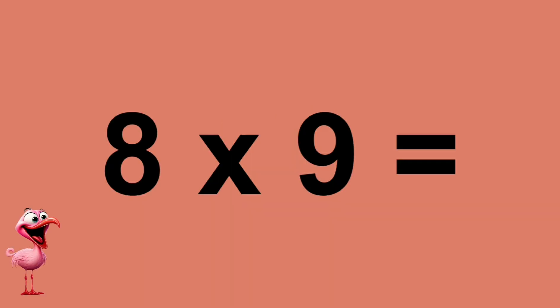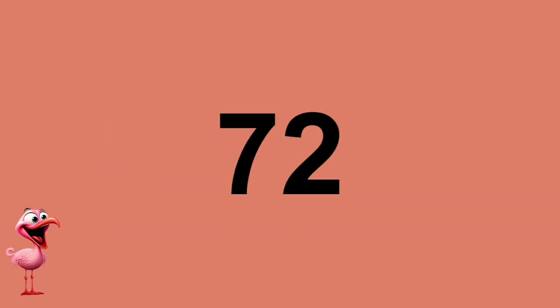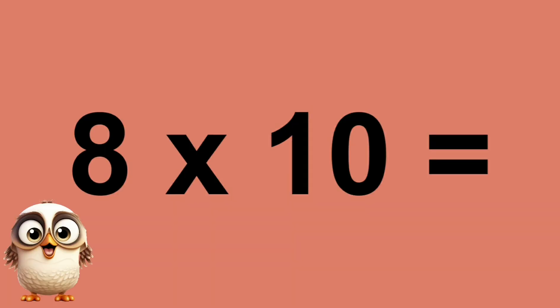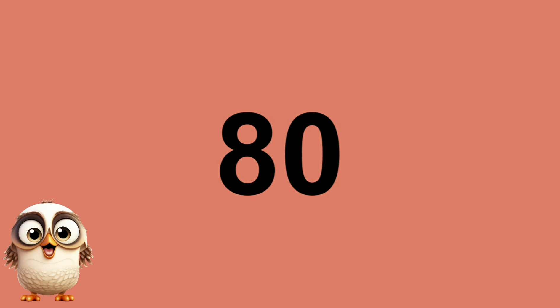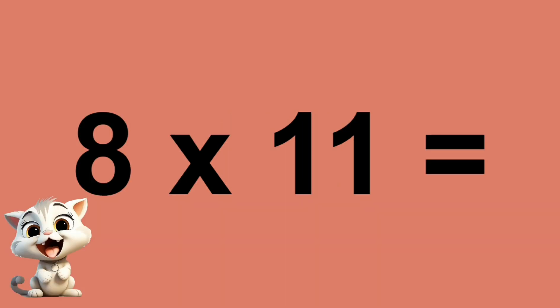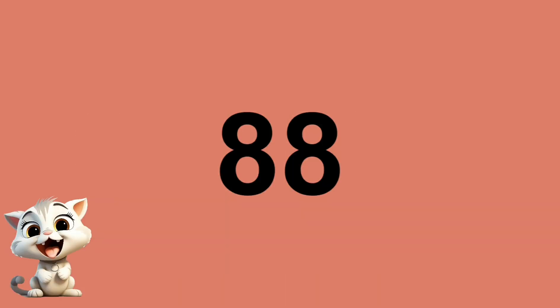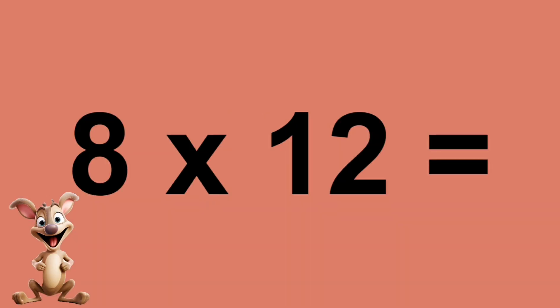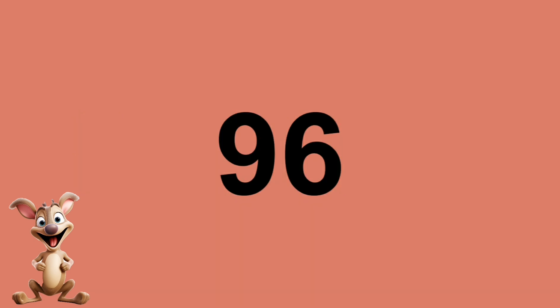Eight times nine equals seventy-two. Eight times ten equals eighty. Eight times eleven equals eighty-eight. Eight times twelve equals ninety-six.